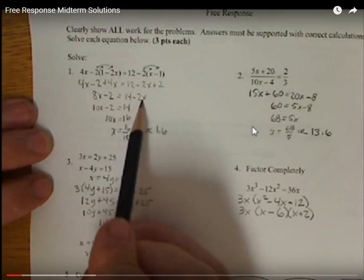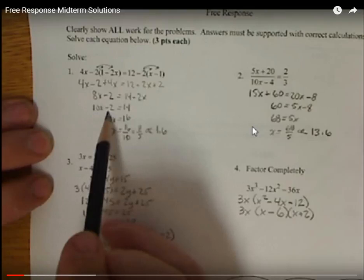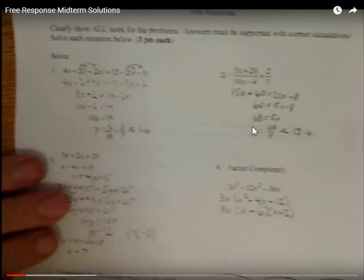Minus 2x. I want to move all my x's to one side. So I added 2x to both sides. Gave me 10x minus 2 equals 14. Added 2. And then divided by 10.